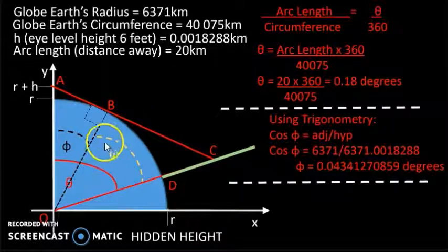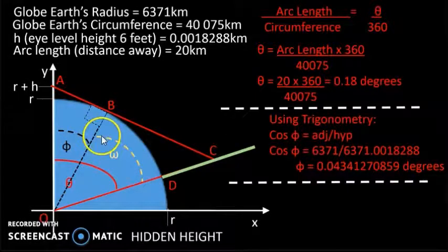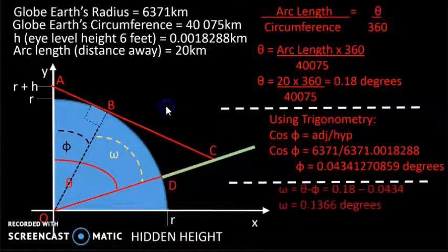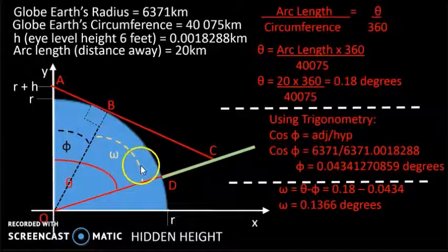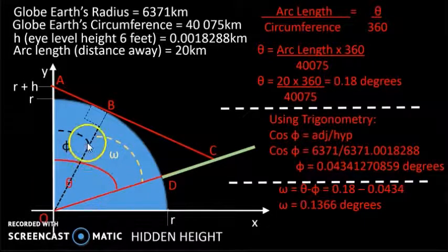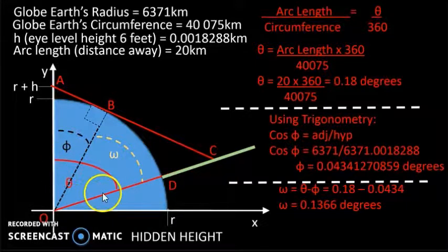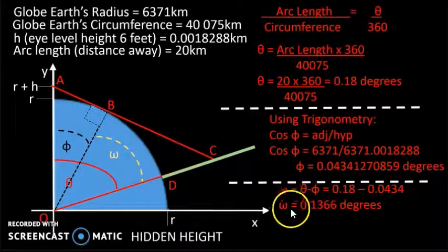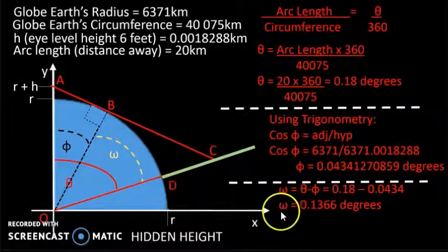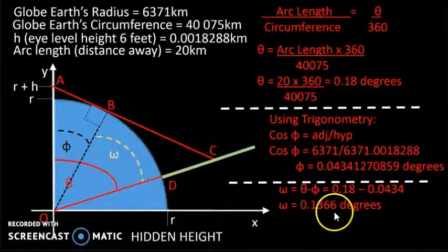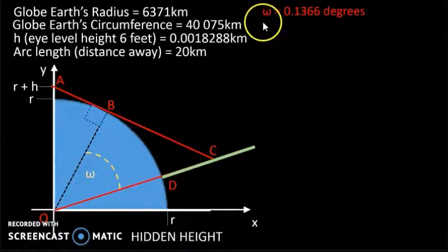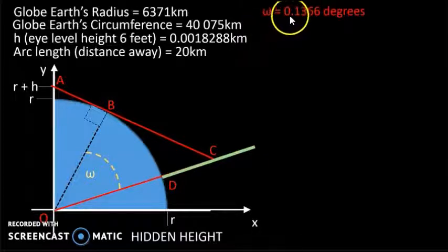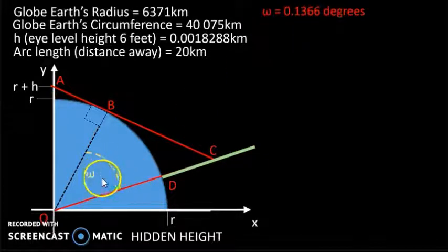Now we can find this angle, which we'll call omega. This is the large angle and this is the small angle. So omega is equal to the large angle minus the small angle, theta minus phi. And we get 0.1366 degrees. So here we have omega equals 0.1366 degrees, this angle here.